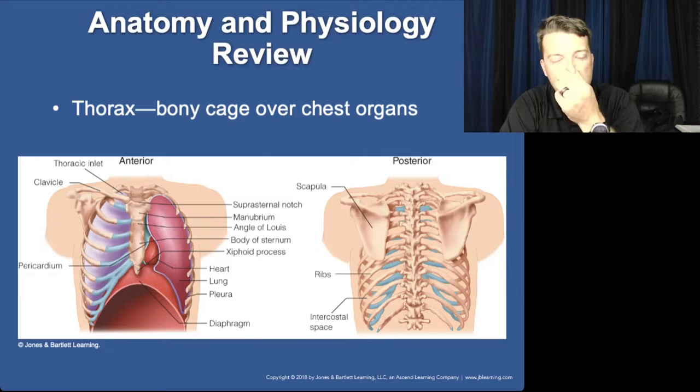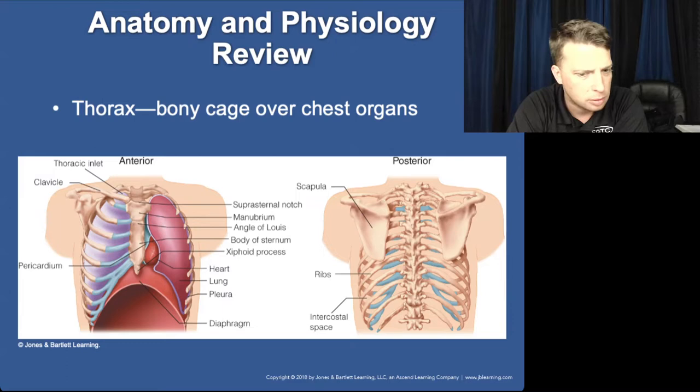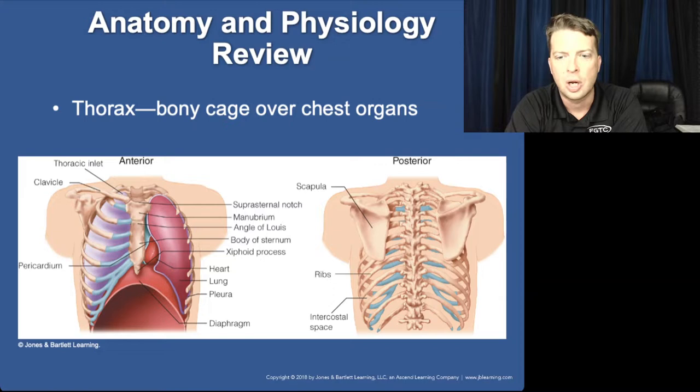Let's talk about anatomy. We have 12 pairs of ribs. The difference between true ribs and false ribs is that true ribs are all connected to the sternum, but the cartilage of the false ribs connects to the cartilage of another rib rather than directly to the sternum.